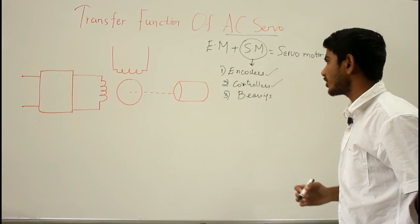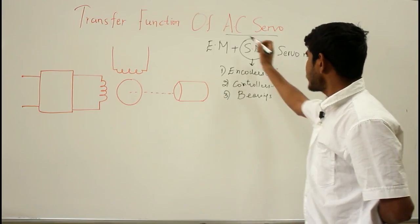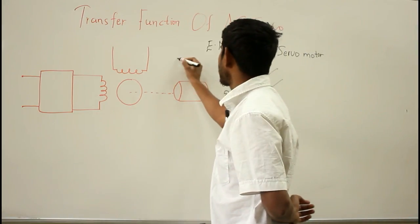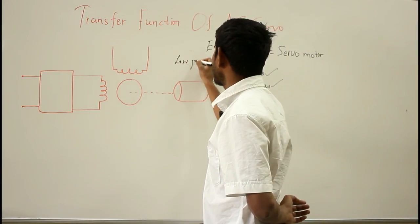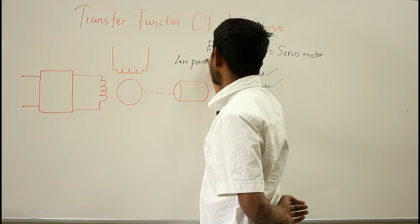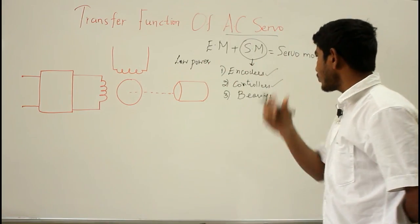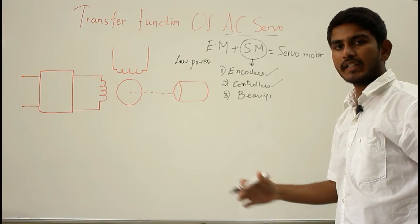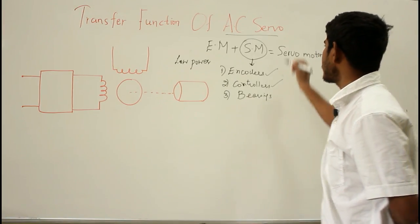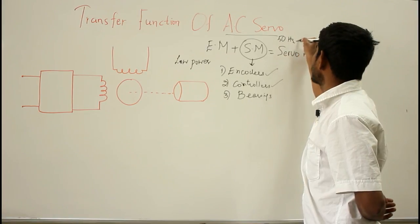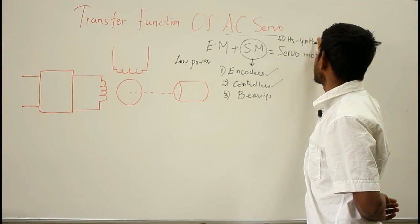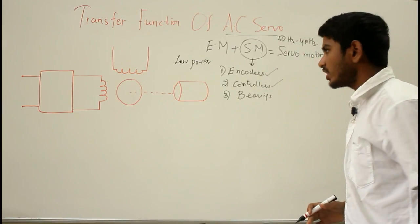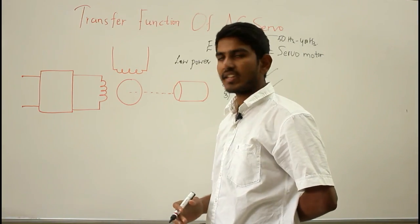AC servo motors are used for low power servo mechanisms. The output power of an AC servo motor ranges from a fraction of watts to hundreds of watts, and the operational frequency ranges from 50 Hz to 400 Hz. This AC servo motor is similar to a two-phase induction motor except for certain design features.